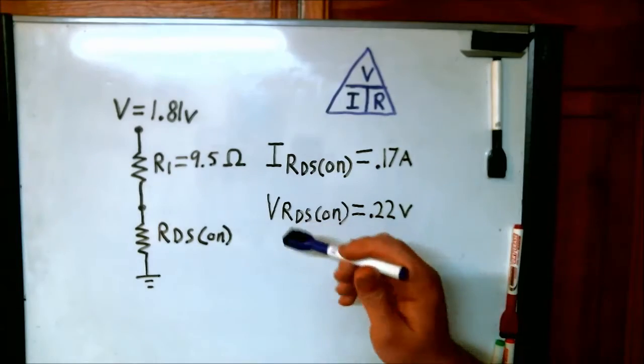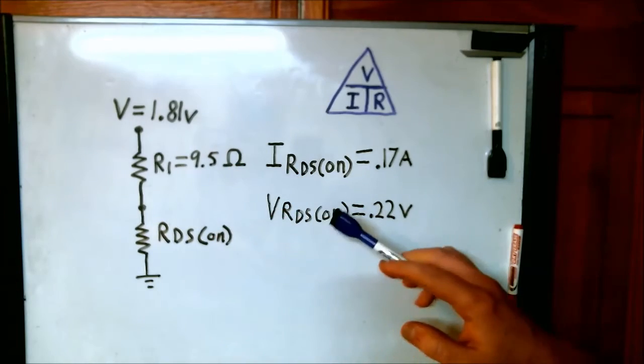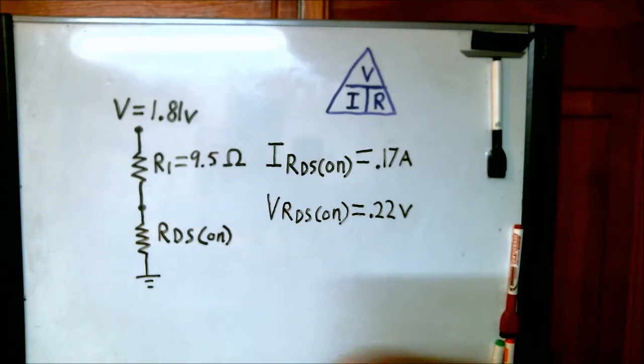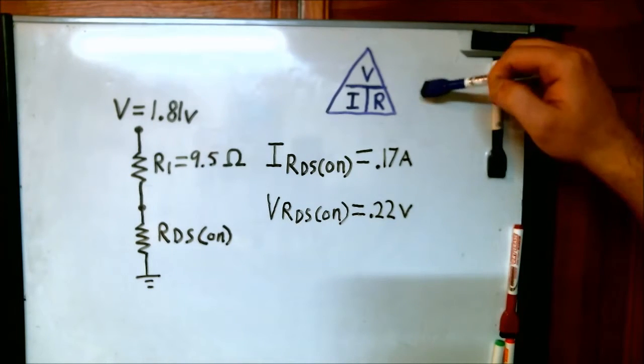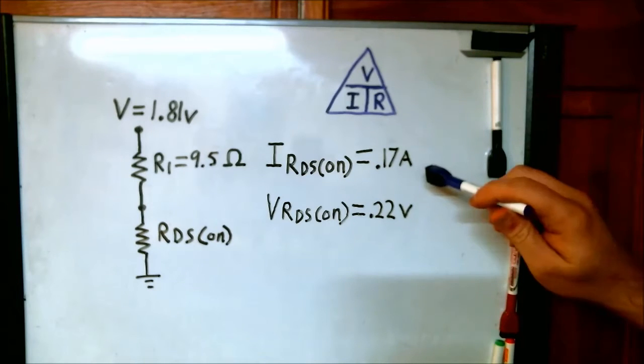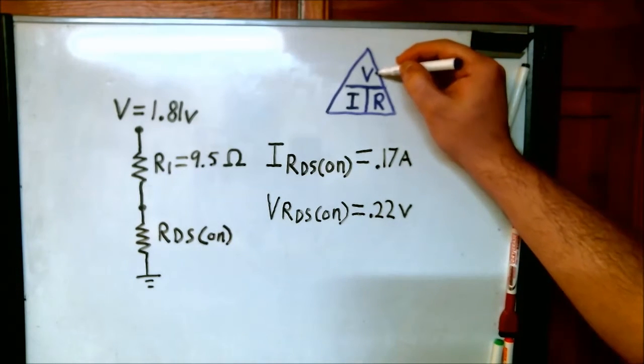From our bench measurement, we know the voltage across the drain and the source, and we know the current through the drain and the source. Here's the current and here's the voltage. Now we just need to use Ohm's law to determine the resistance by dividing the voltage by the current.